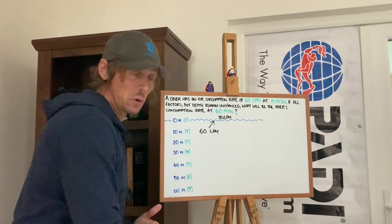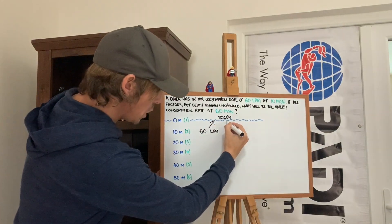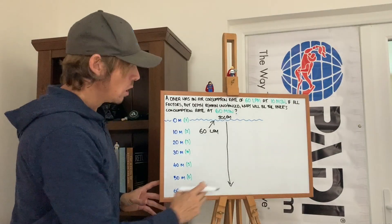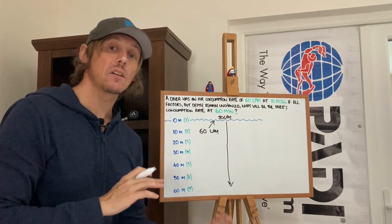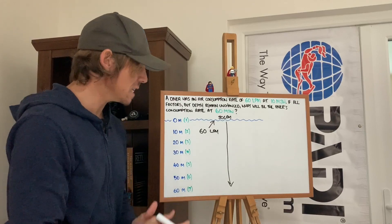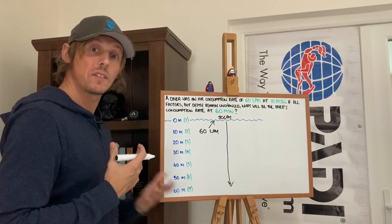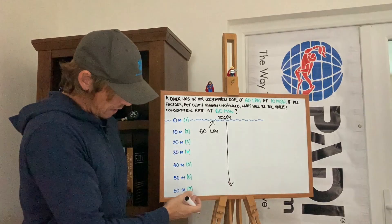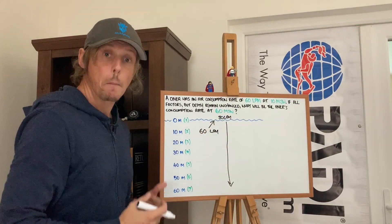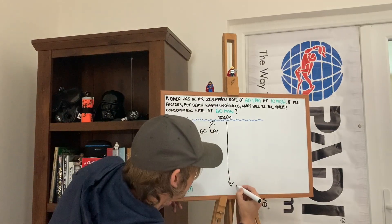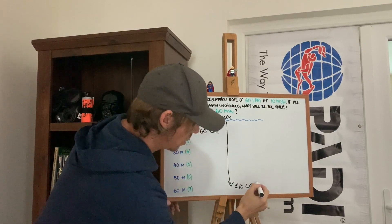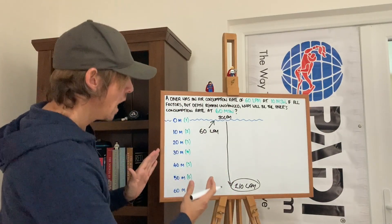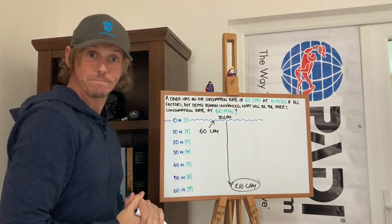Now we have to take it back down. We're going down to 60 meters, where the pressure is seven atmospheres. Would we expect to breathe more gas as we go deeper? Yes — it takes seven times as much gas to fill your lungs down there as it does at the surface. So how do we make the 30 liters bigger? We multiply it by seven. 30 multiplied by seven is 210. So 210 liters per minute will be your breathing rate once you reach depth. It makes sense: less as you go up, more as you come back down.